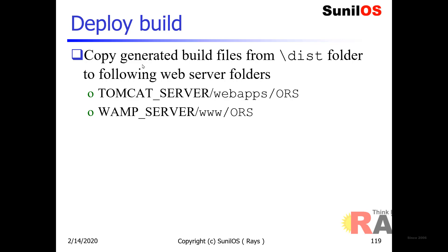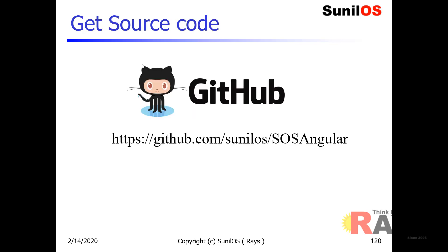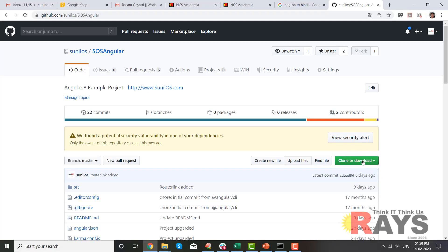Similarly, because we will also deploy our application on WAMP server, we will copy our build from the distribution folder to the WAMP server's www/ORS folder. You can get my Angular project from my GitHub account at github.com. You can copy the Angular project from my git account.